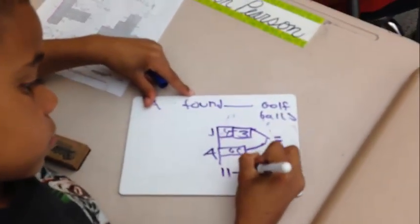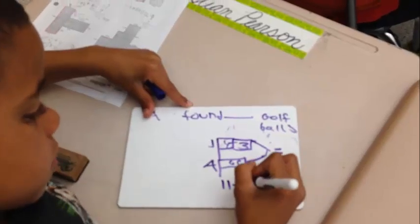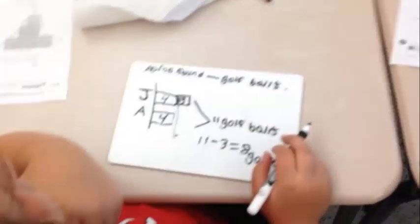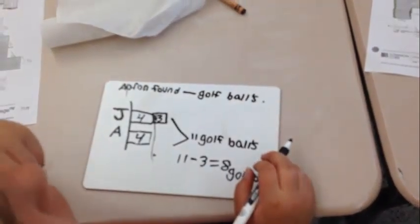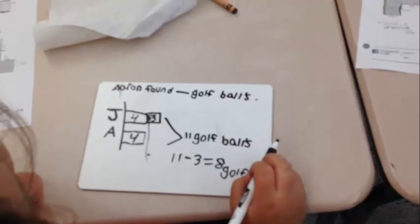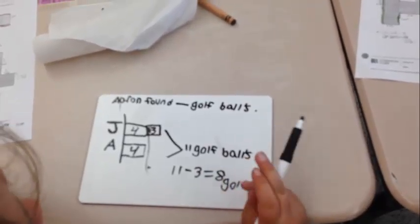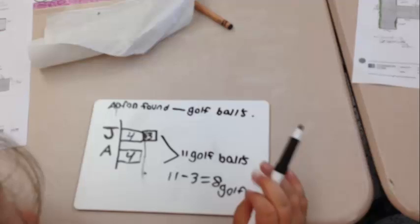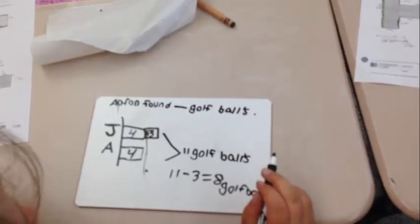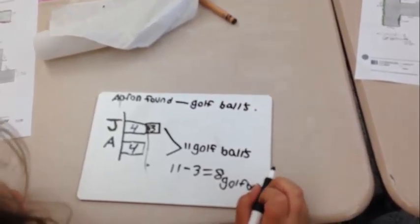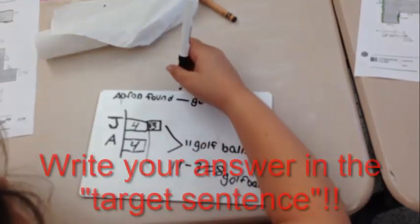So, who can answer the question, how many golf balls did Aaron have? Eight. Mason, how many golf balls did Aaron have? Okay, Destiny, look at your picture and tell me how many Aaron had. Where the question mark is. We were looking for how many Aaron had. Mason? Four. Four. So, up here in your sentence, Aaron found four golf balls.